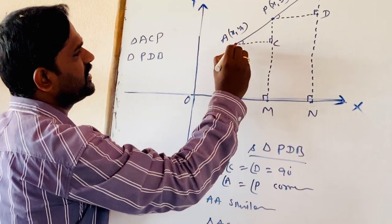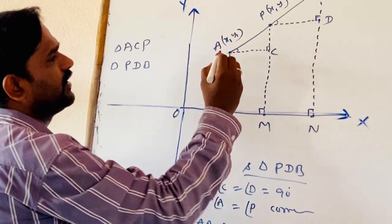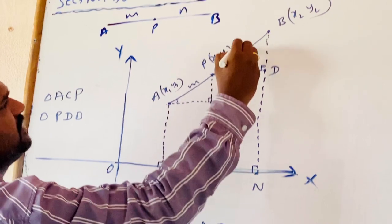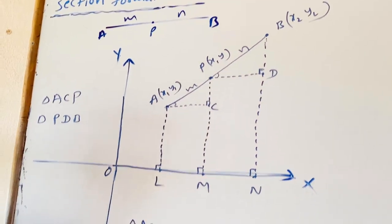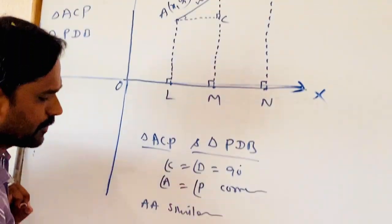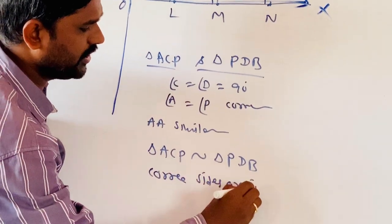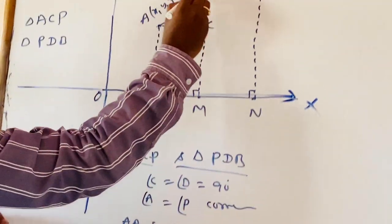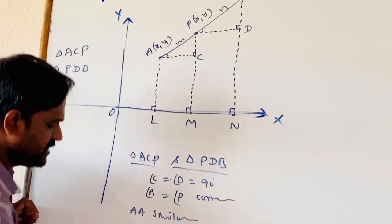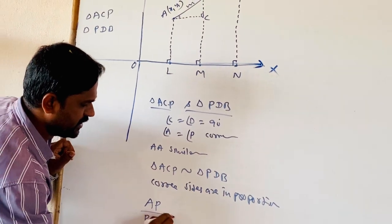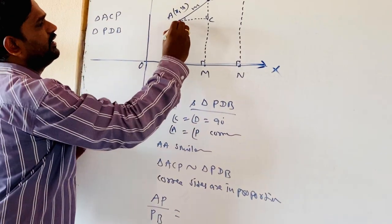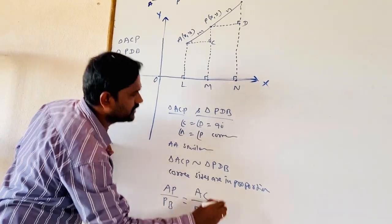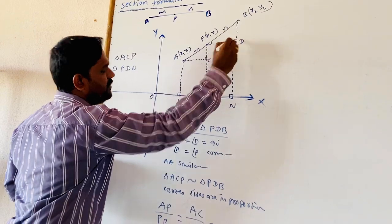Which are the corresponding sides? AP by PB — where AP length is M and PB length is N — so M by N is equal to AC by PD, which is also equal to PC by BD.